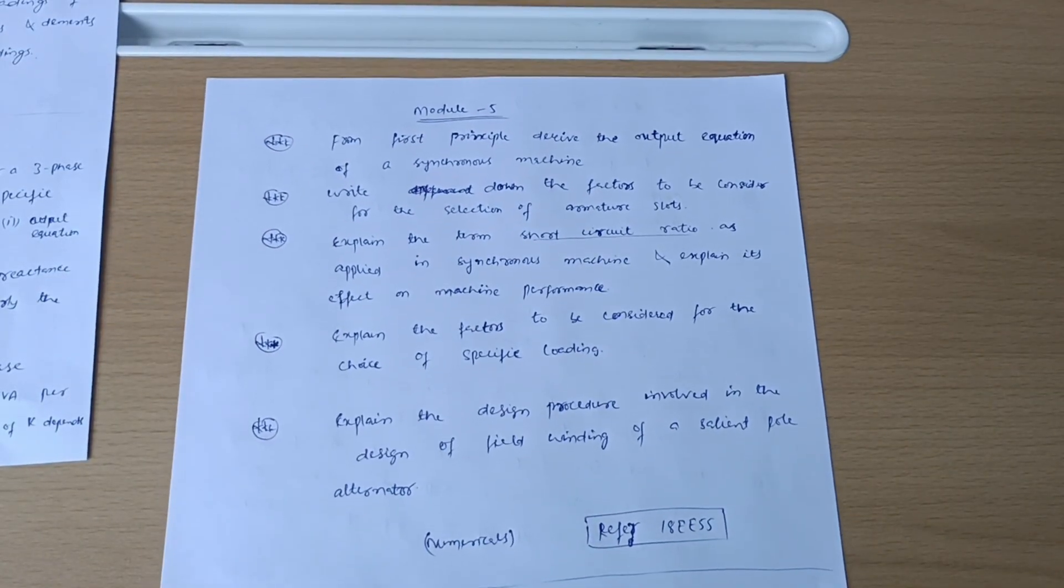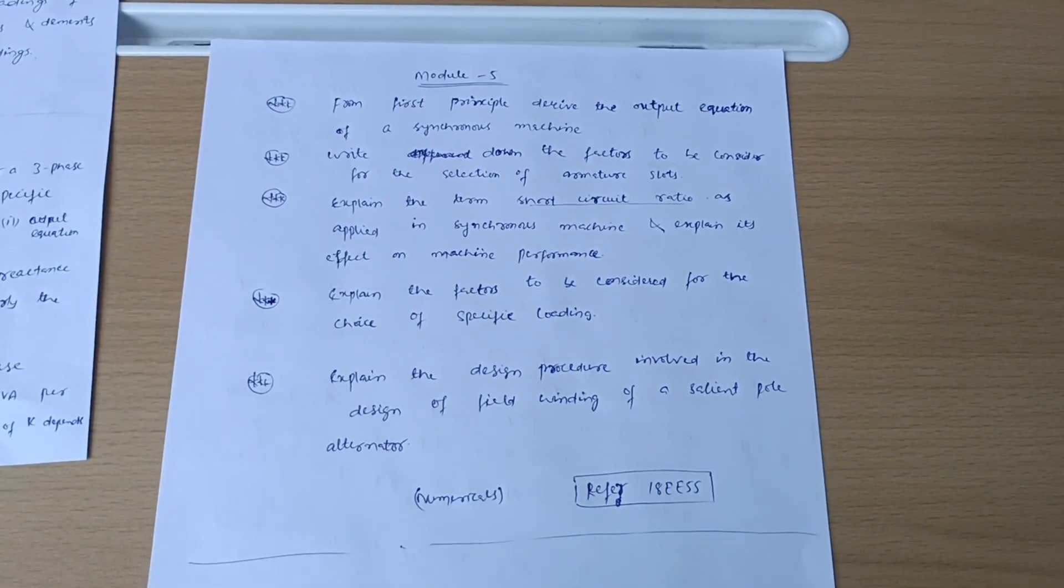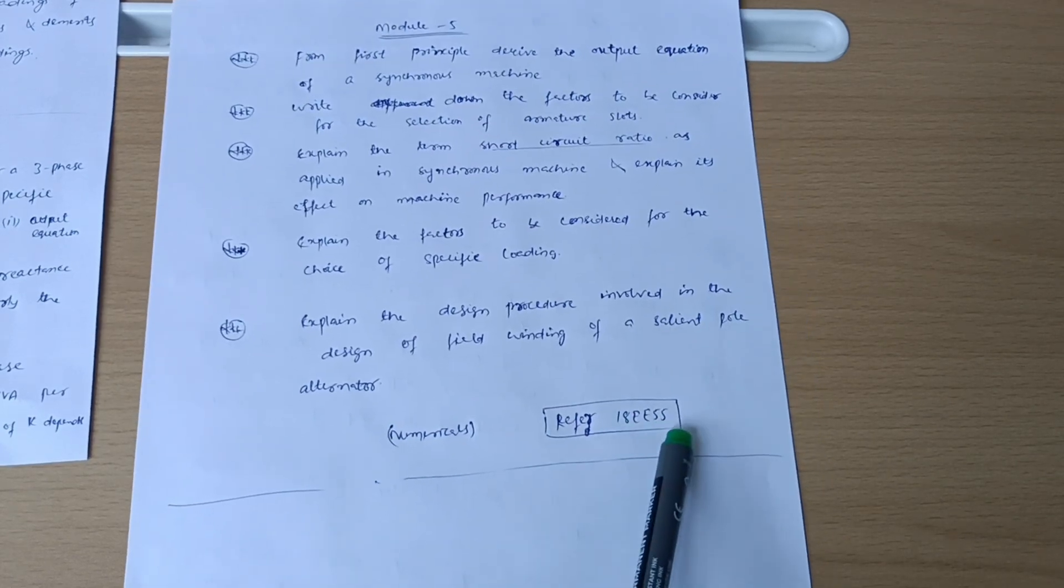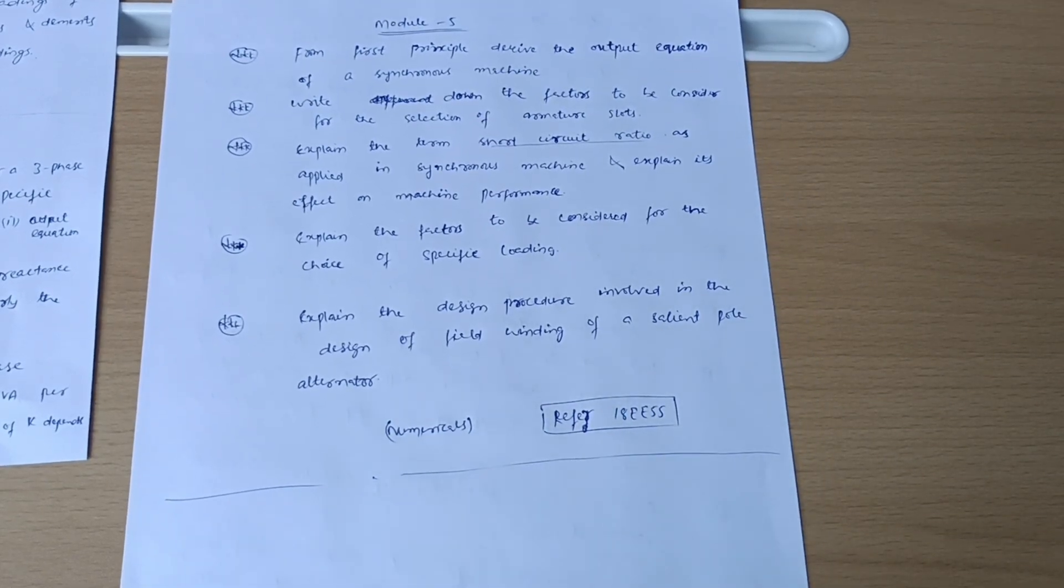Another one is here, Model 5. Make sure for the numerical part you will refer 18EE55. Go through varieties of numericals if you are convenient, otherwise you can go through theoretical portions within one night to pass the particular subject.